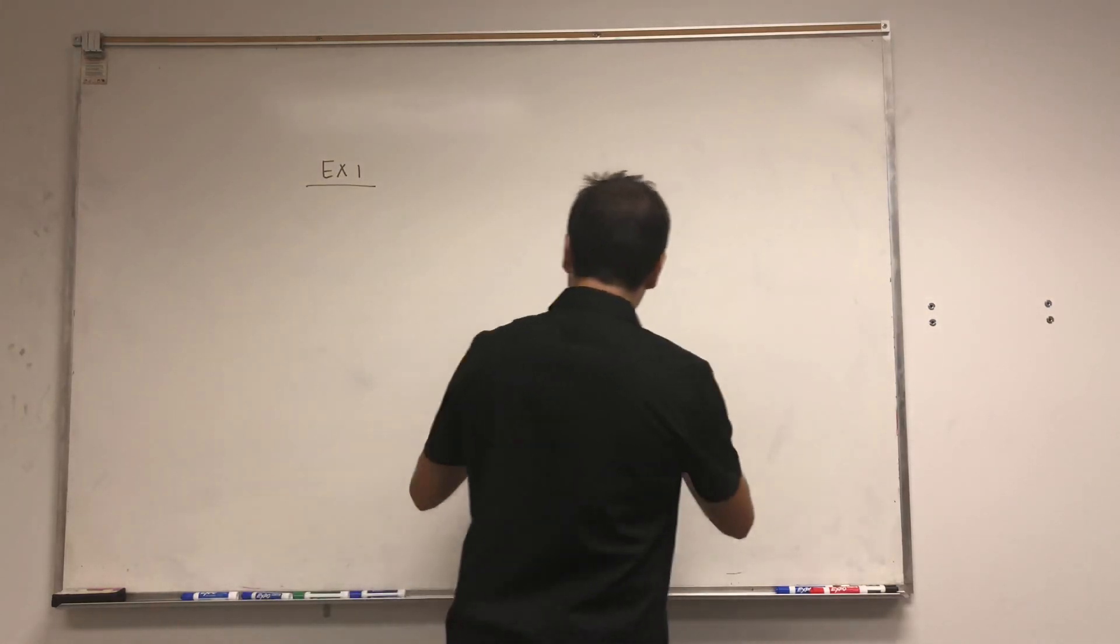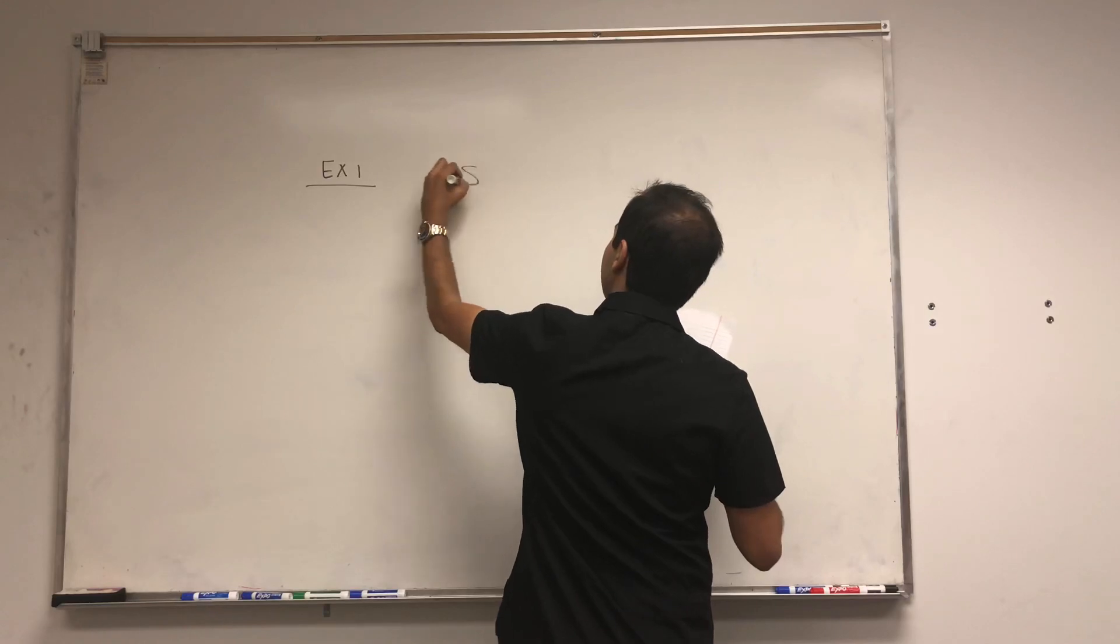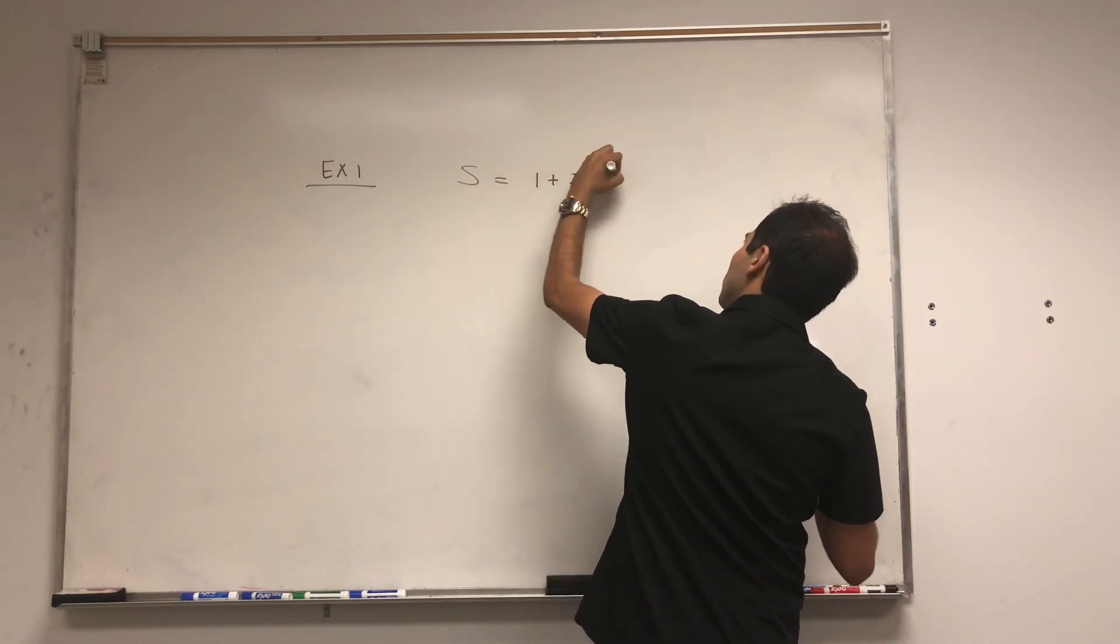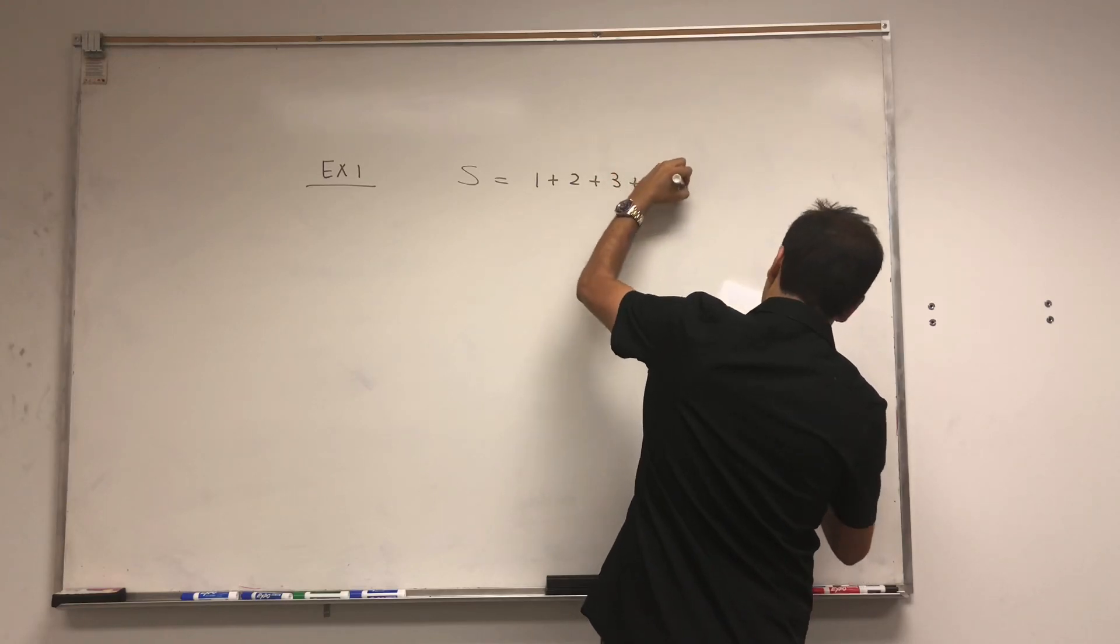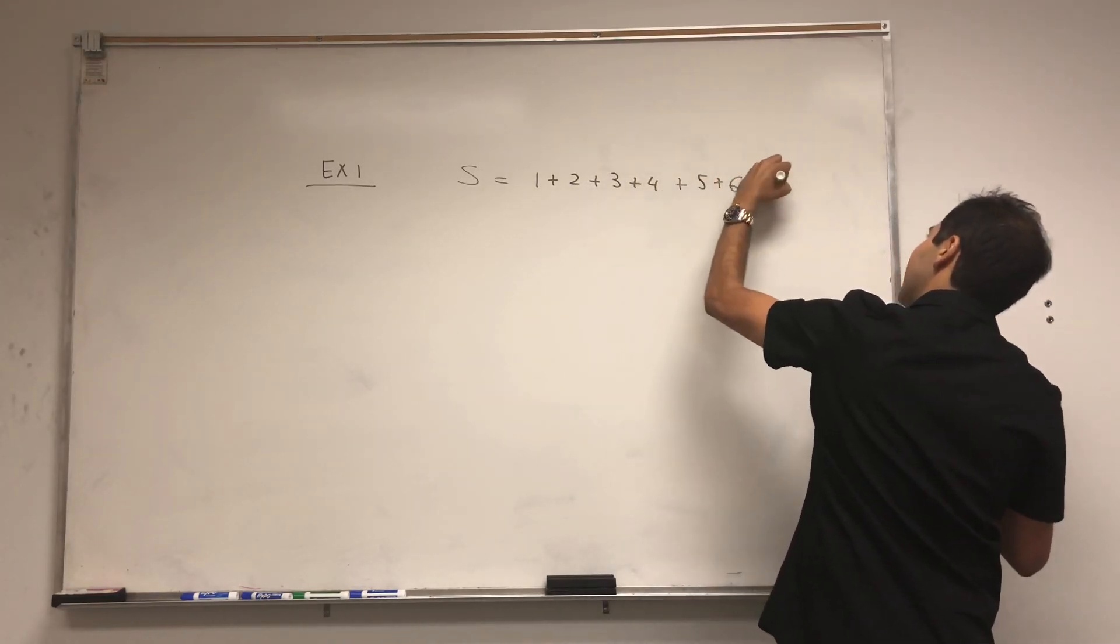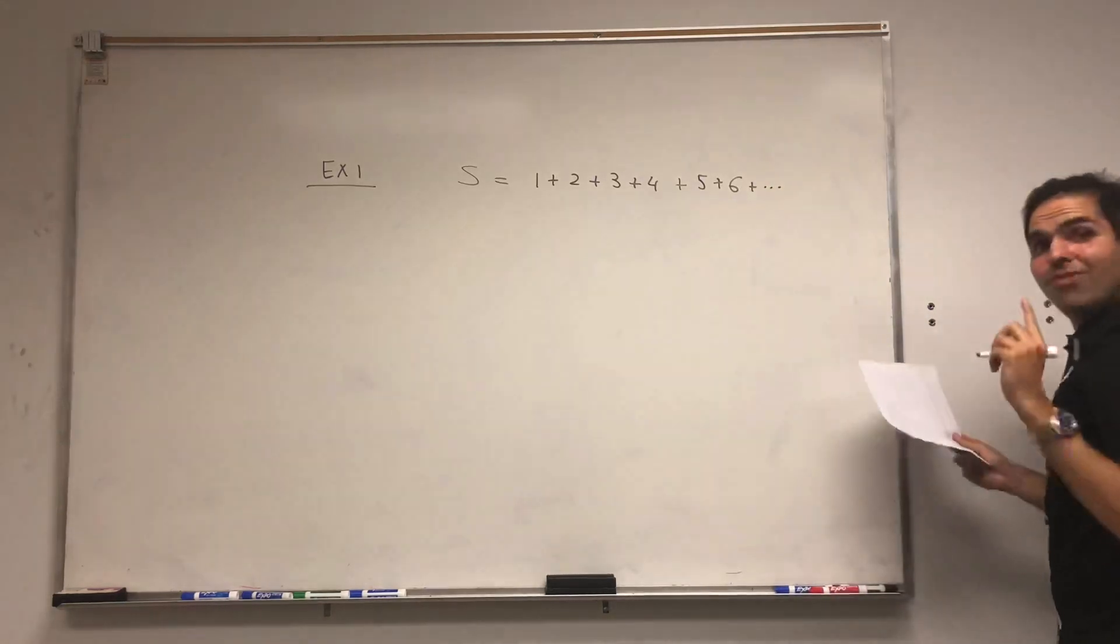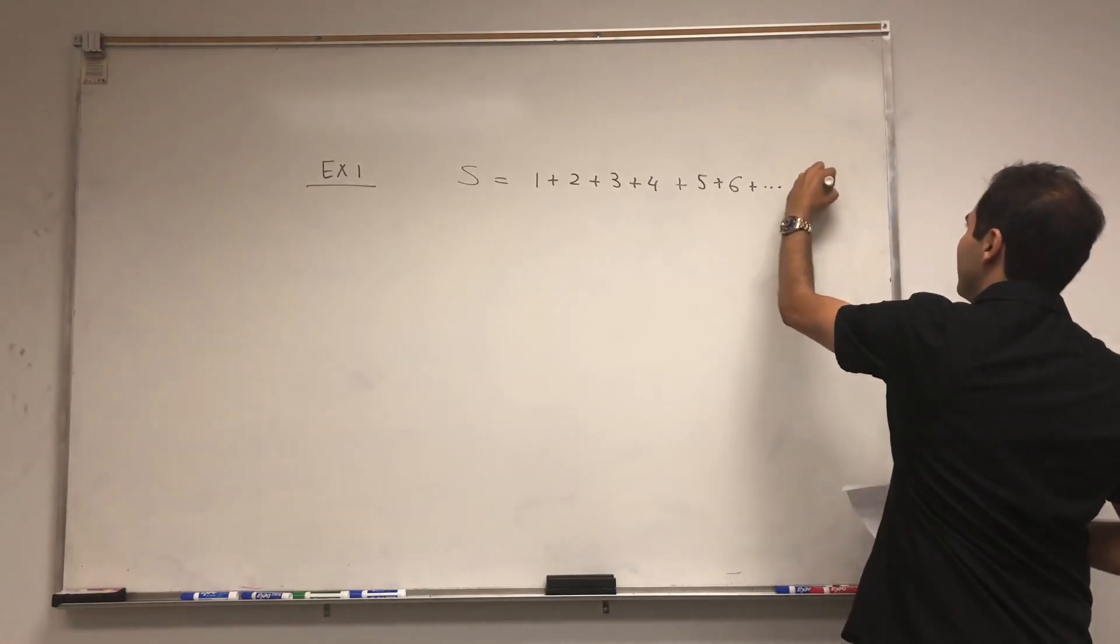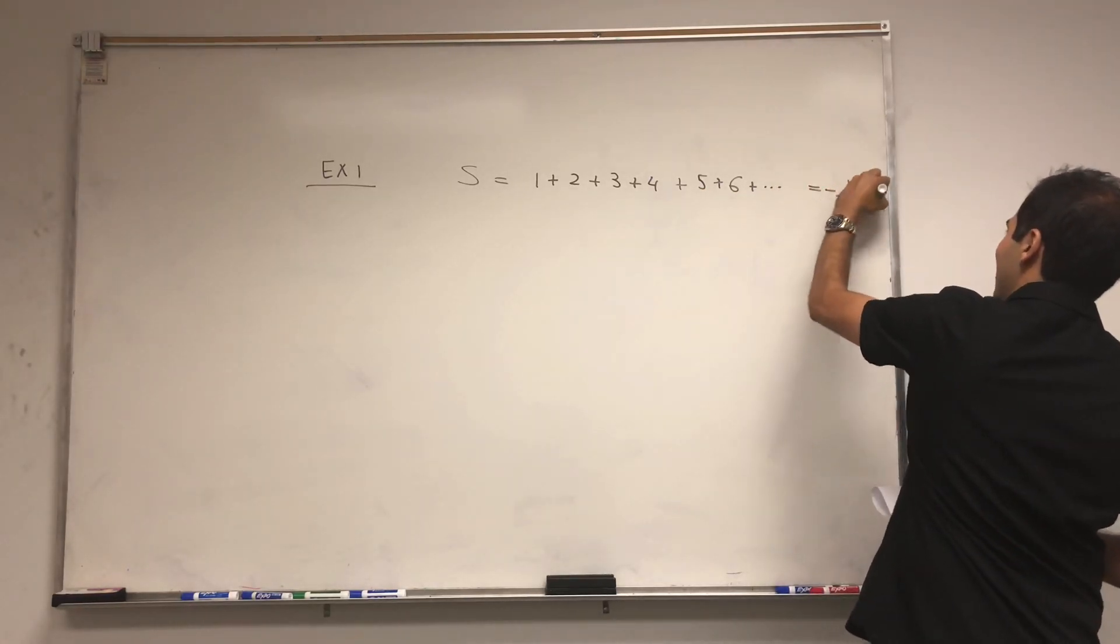So I'll do three examples. The first one I want to consider is the sum of 1 plus 2 plus 3 plus 4 plus 5 plus 6, etc. And I actually want to show you that if you're not careful, you find that this sum equals to minus 1 over 12.